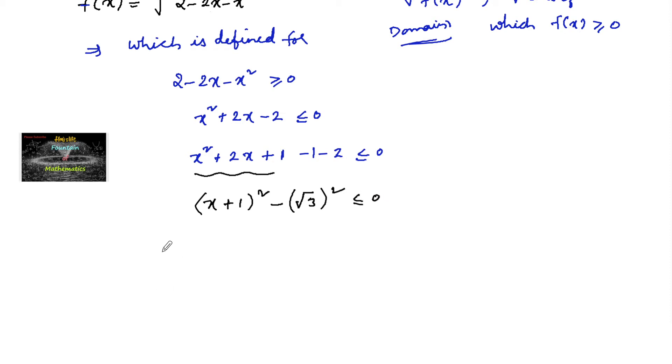So on factorizing, we can write this as x plus 1 plus root 3. It's in the form of a square minus b square. So a plus b into a minus b, less than or equals to 0.